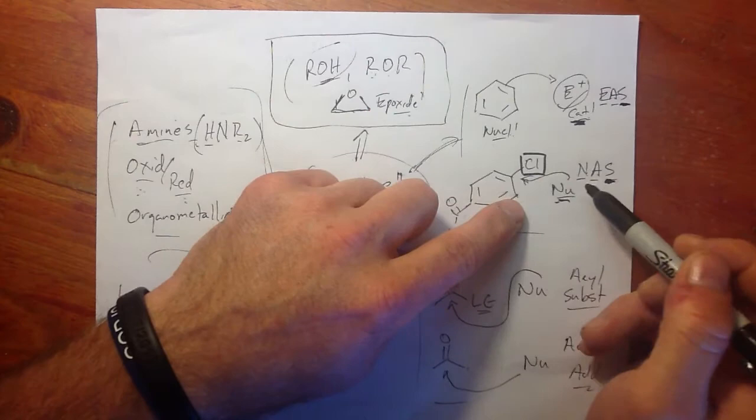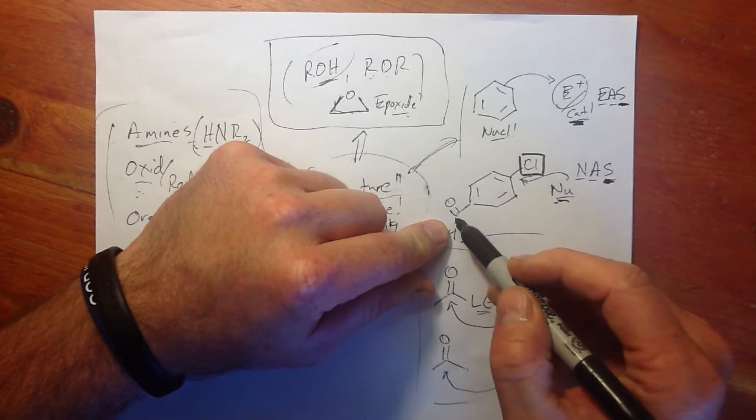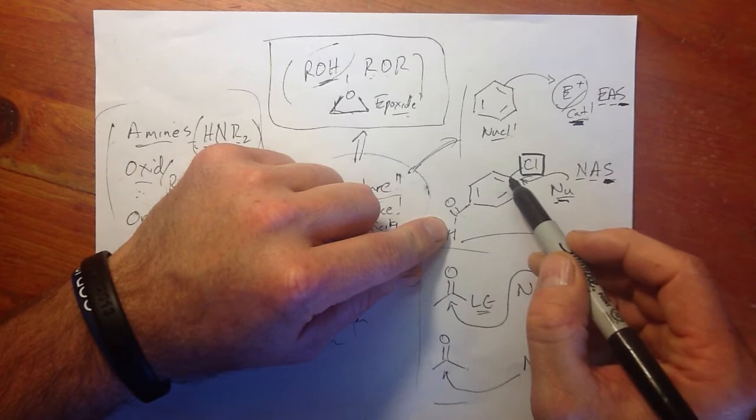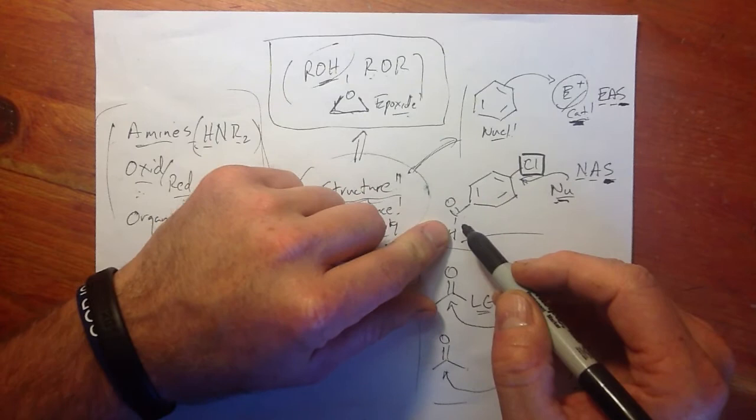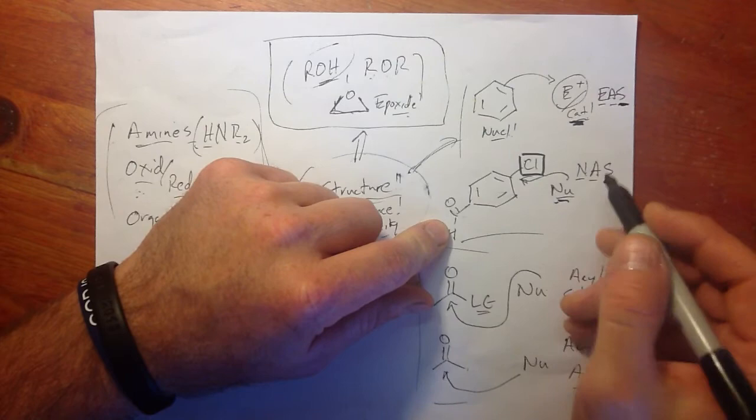In NAS everything was flipped. Groups that were deactivating — like a carbonyl off of a benzene ring — became activators if we want to have a nucleophile come in and attack that carbon. It pulls electron density away, and we needed at least a halogen off the benzene ring for any type of NAS. It was helpful to have electron-withdrawing groups at the para or ortho positions.